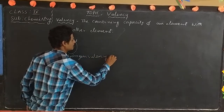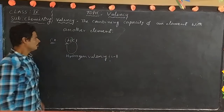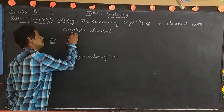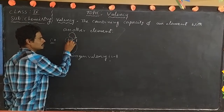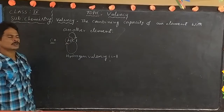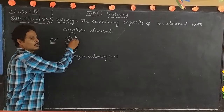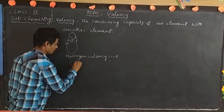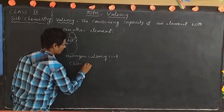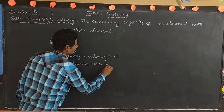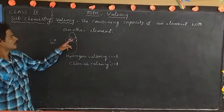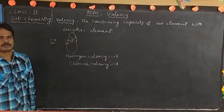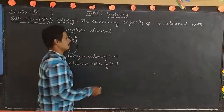Hydrogen valency is one. If you want chlorine valency, how can you find out? Same definition. How many hydrogens attach to a chlorine atom? One hydrogen attaches to the chlorine atom. That is why chlorine valency is also one.